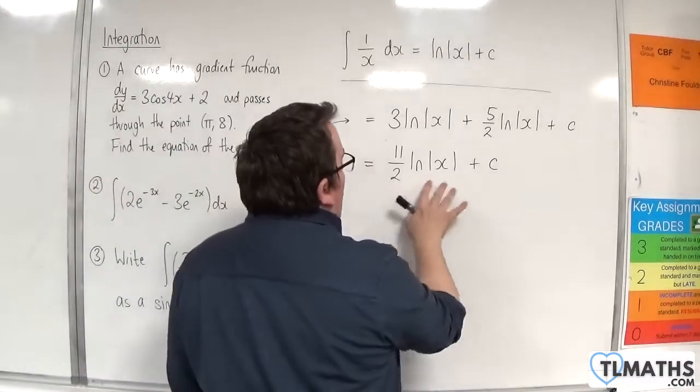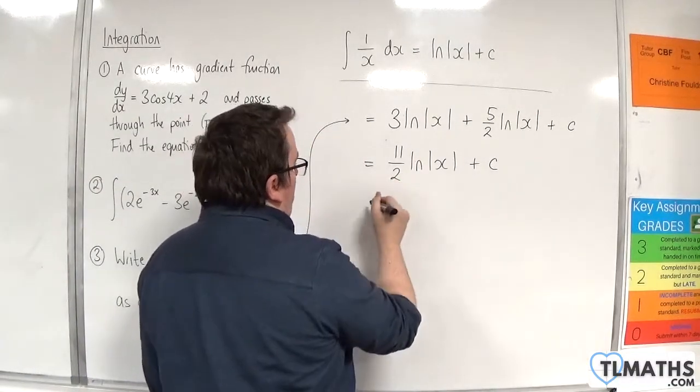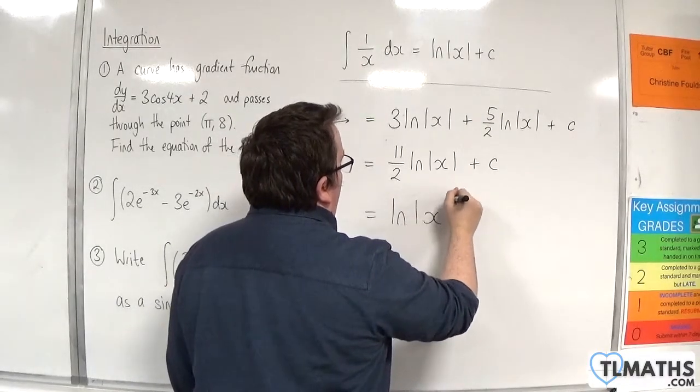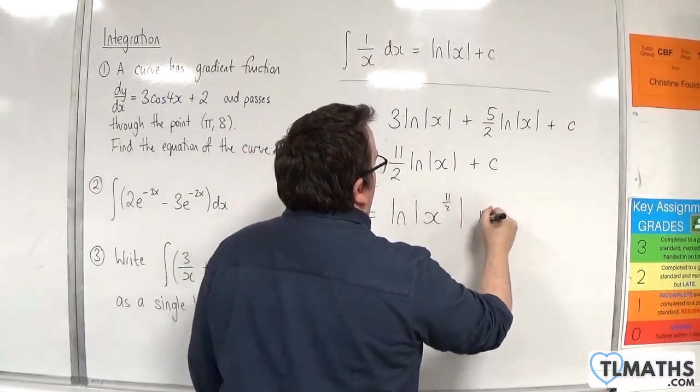Using the power law for logarithms, we can bring the 11 halves up to the power here. So we have the natural log of the modulus of x to the 11 halves plus c.